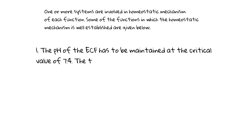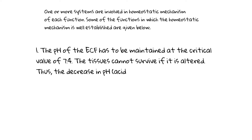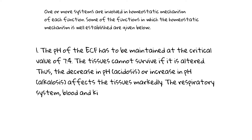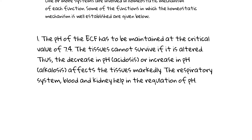The pH of the extracellular fluid has to be maintained at the critical value of 7.4. The tissues cannot survive if it is altered. Thus, the decrease in pH — acidosis — or increase in pH — alkalosis — affects the tissues markedly. The respiratory system, blood, and kidney help in the regulation of pH.